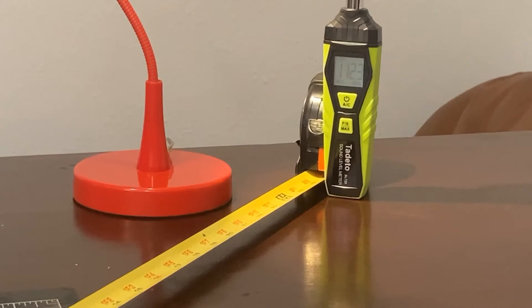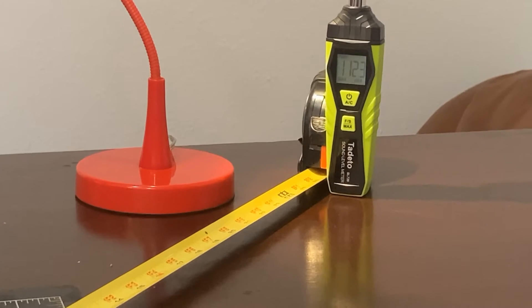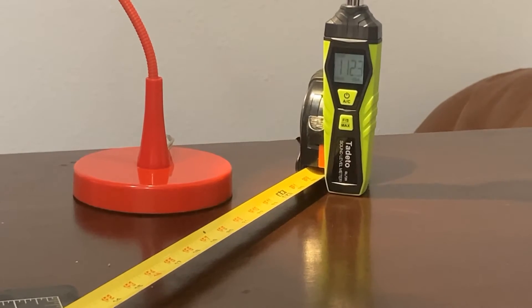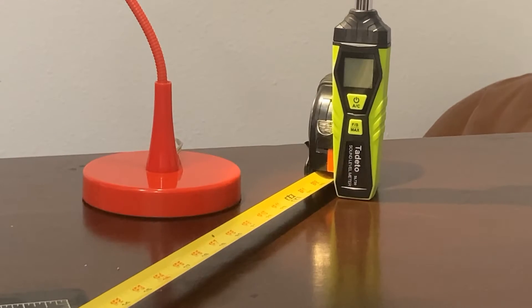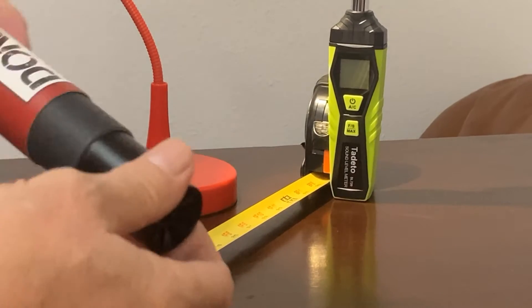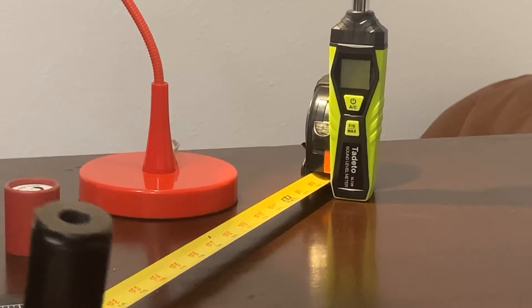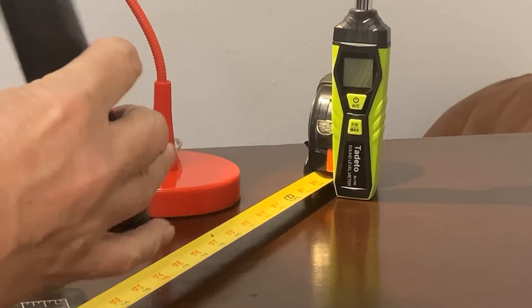112.3. Okay, so we got some pretty good readings there with no suppressor in place. We will go ahead and put on our Donny F.L. Tonto.